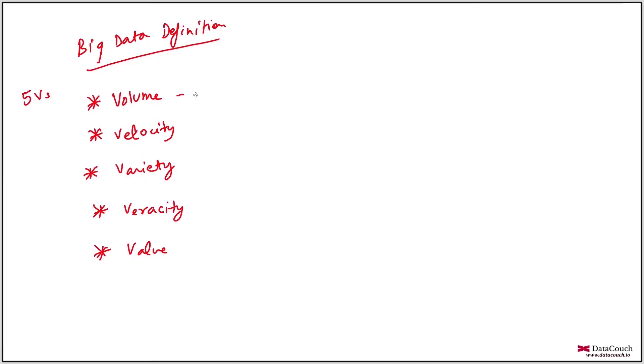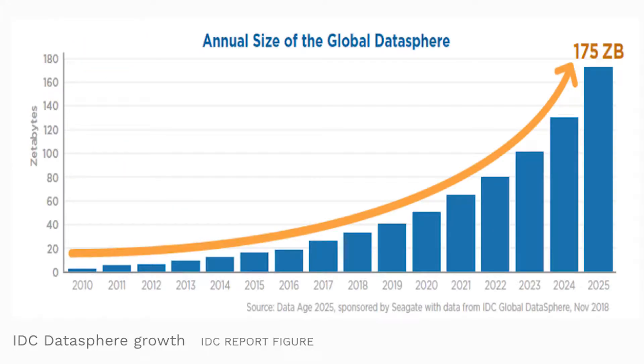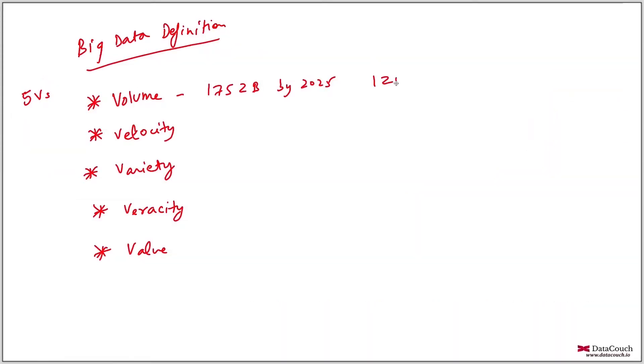Volume is the data coming from different sources that is huge, growing very fast. According to IDC, an organization that makes predictions, the global data sphere will grow to 175 zettabytes by 2025. What is a zettabyte? One zettabyte equals one million petabytes.